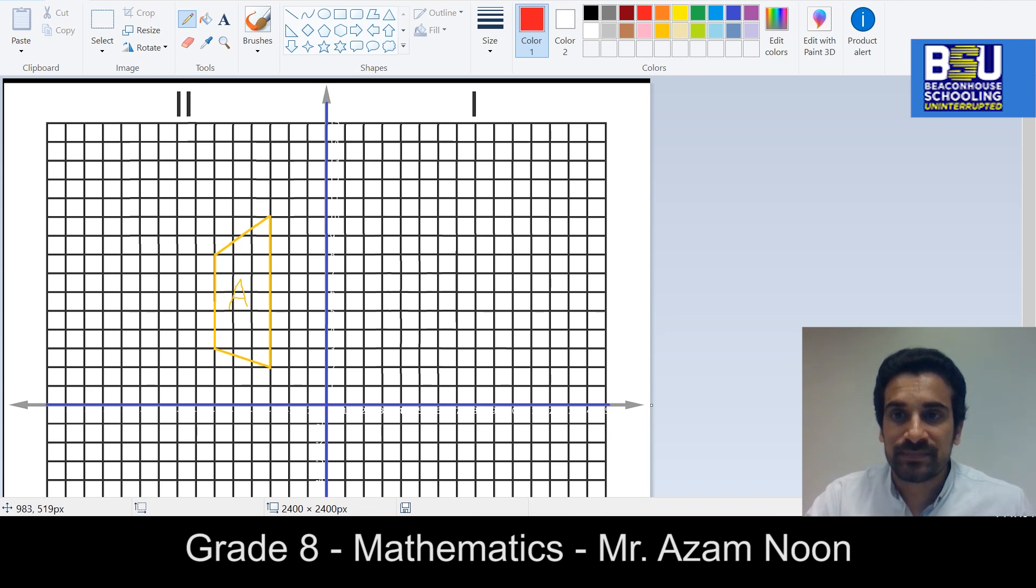So without much further ado, let's get started. I want you to note that this vertex over here is one, two, three units away in the negative x side. So I am going to jump three units towards the positive x side.